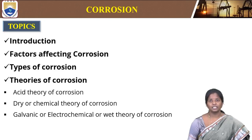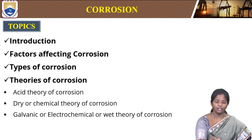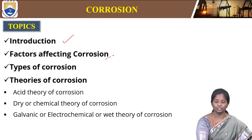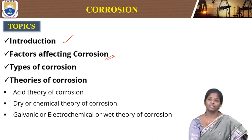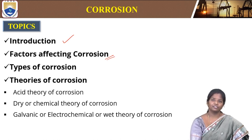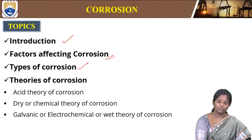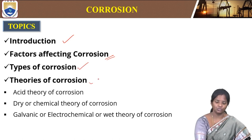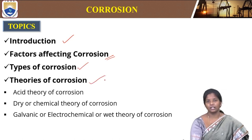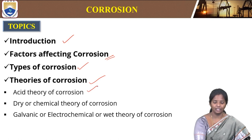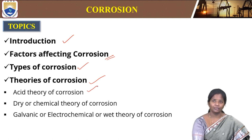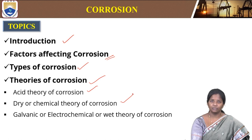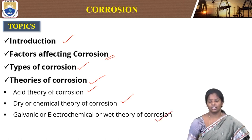Here are the topics: introduction to corrosion, what is corrosion, then factors affecting corrosion — what are the factors that really affect the metal for corroding — then types of corrosion, then theories of corrosion. These theories are again classified like acid theory, dry or chemical theory, and then galvanic or electrochemical or wet theory of corrosion. We will discuss all this in detail.